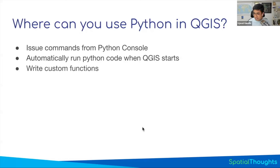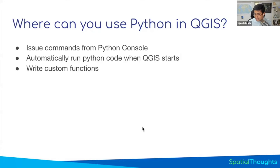If you use QGIS expressions, QGIS has an expression engine with functions similar to Excel formulas, available throughout QGIS for styling, analysis, and adding new fields. You can actually write custom functions using Python and make them available to the expression engine. So if you're using expressions and wish there was one function that would solve your problem but it doesn't exist, you can write it in Python and make it available in your QGIS.